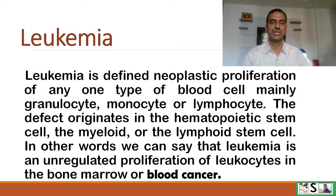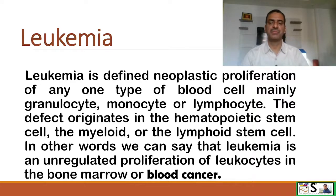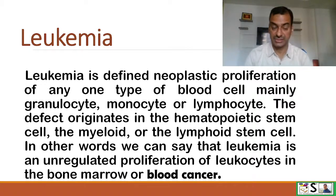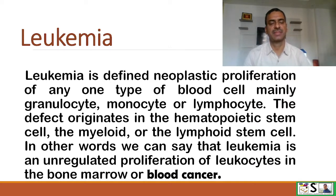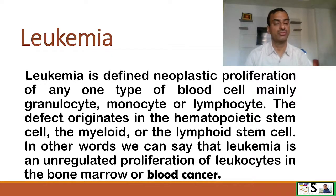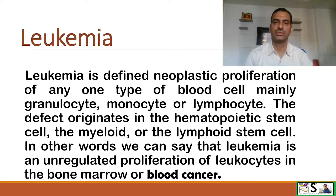...neoplastic proliferation of any type of blood cell, mainly granulocyte, monocyte, or lymphocyte. The defect originates in the hematopoietic stem cell, that is myeloid or lymphoid stem cells. In other words, leukemia is unregulated proliferation of leukocytes or other cells in the bone marrow — or blood cancer.